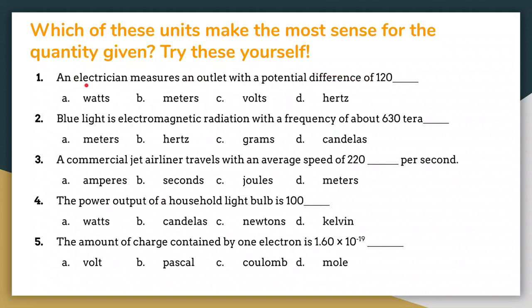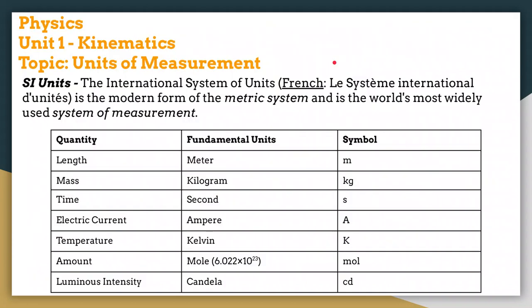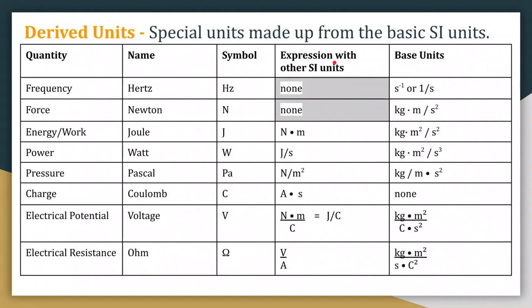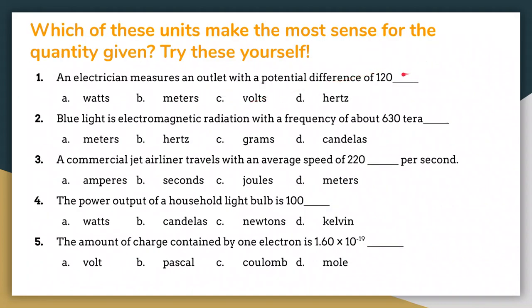I'll read the first one. An electrician measures an outlet with a potential difference of 120 blank. So what I want you to do is go back to these guys here and figure out which one of these makes the most sense for this, if this is electrical potential difference. What about this? It says blue light is electromagnetic radiation with a frequency of 630 tera somethings. So frequency.